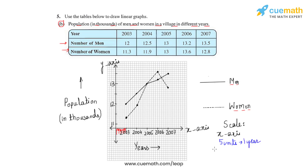On the y-axis, observing the vertical axis, we see that there are ten small units on this side. Hence, we can say that 10 units represents 1,000 people, because the unit of population is already given in thousands. So 10 units represents 1,000.